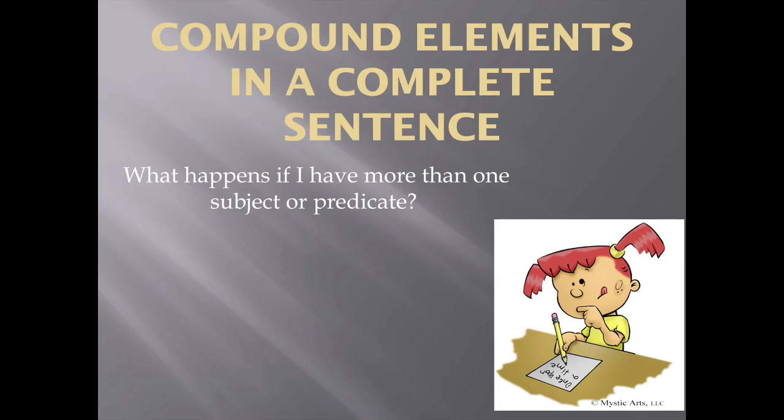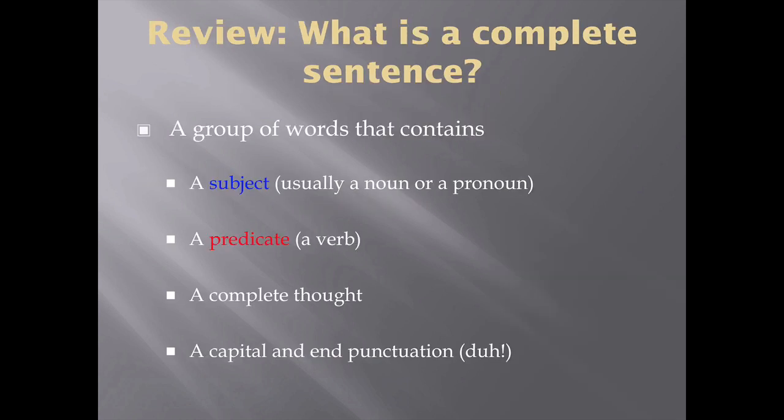Hello, grammar rock stars! You are almost all the way through unit one on the complete sentence, and today we're going to talk about compound elements in a complete sentence. In other words, what happens if you have more than one subject or predicate?